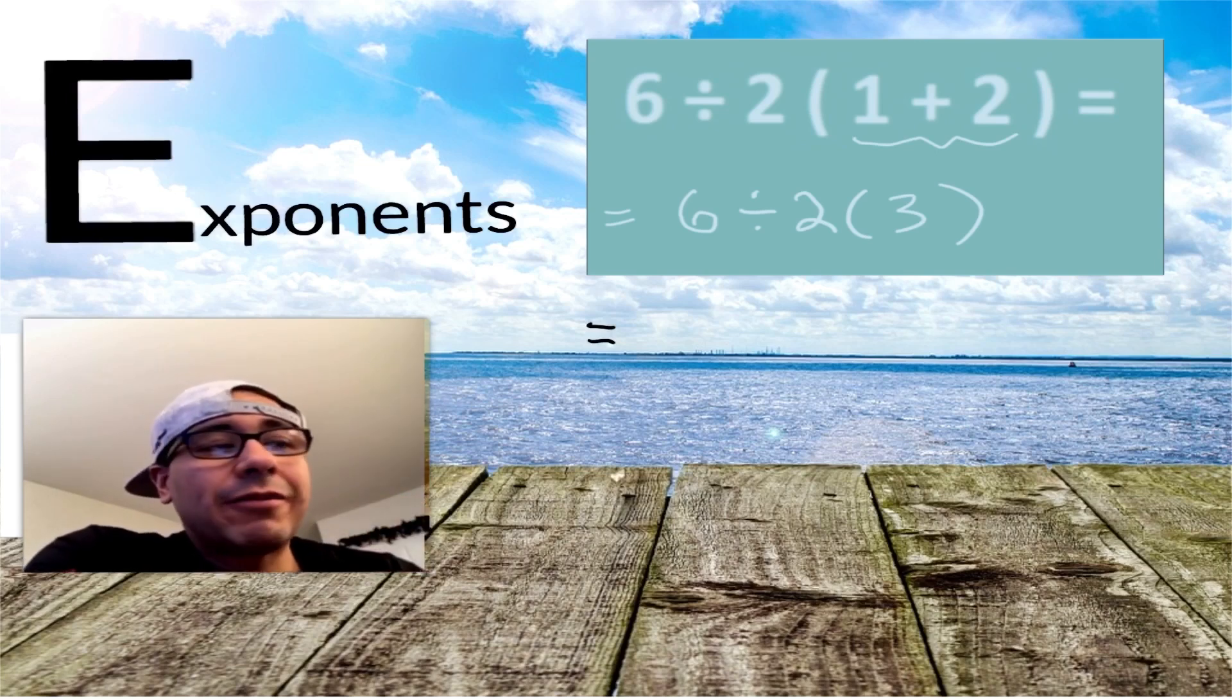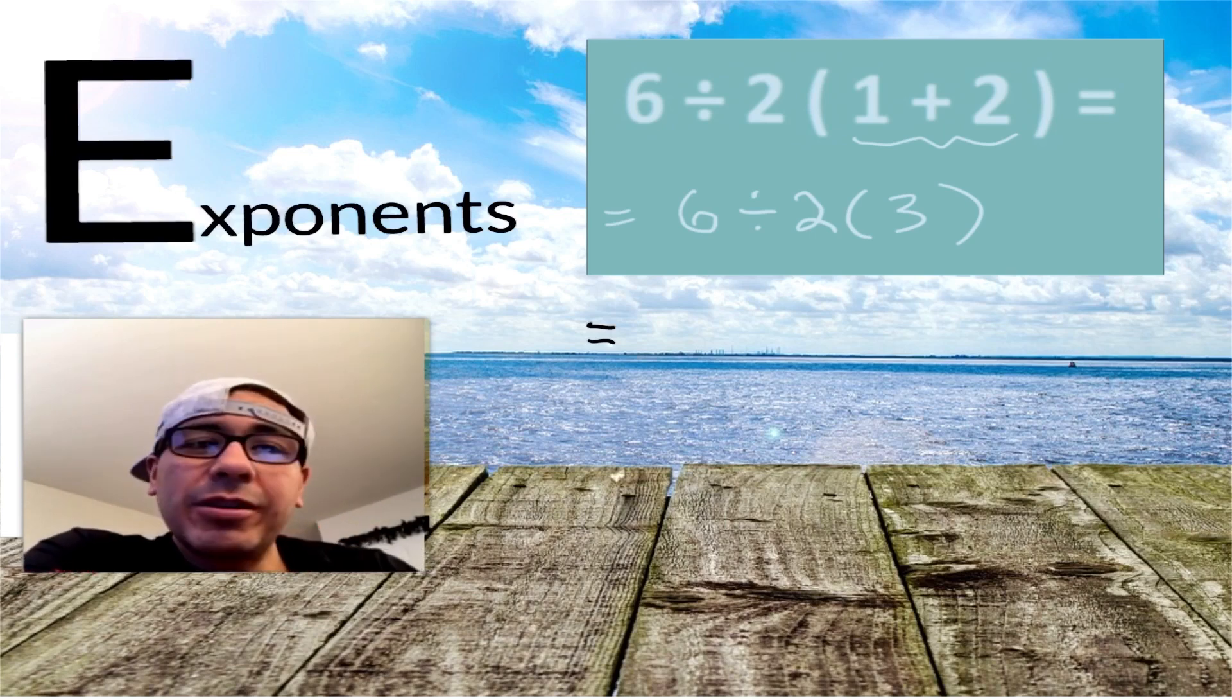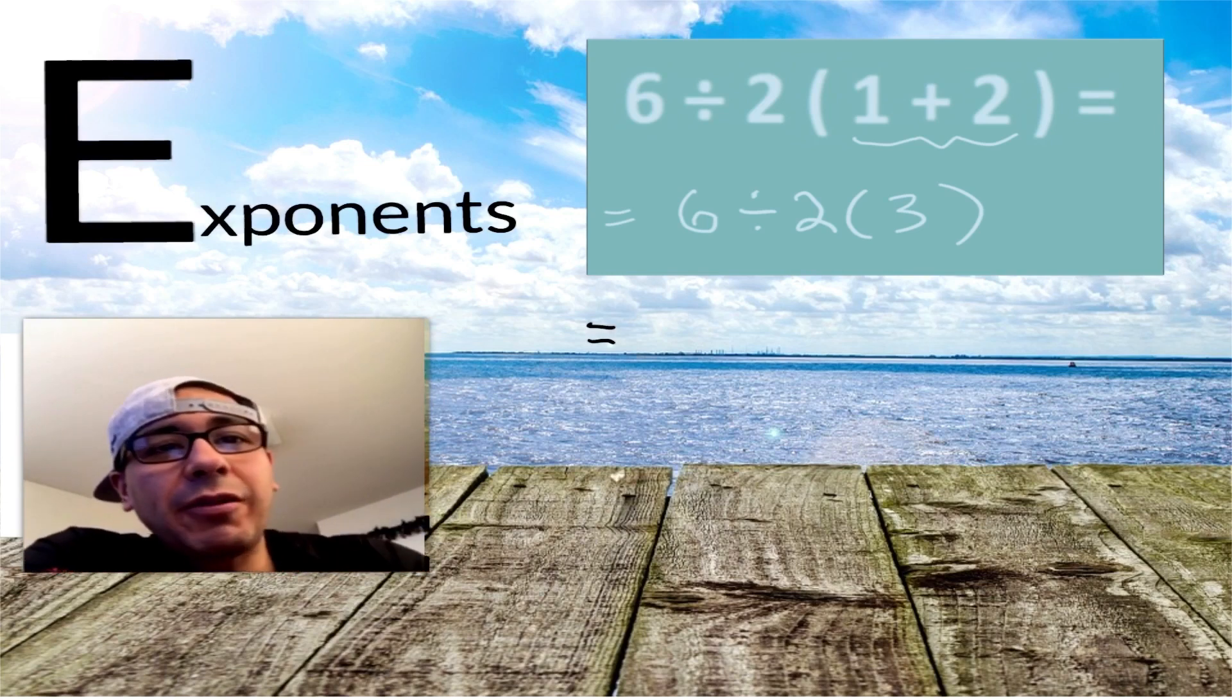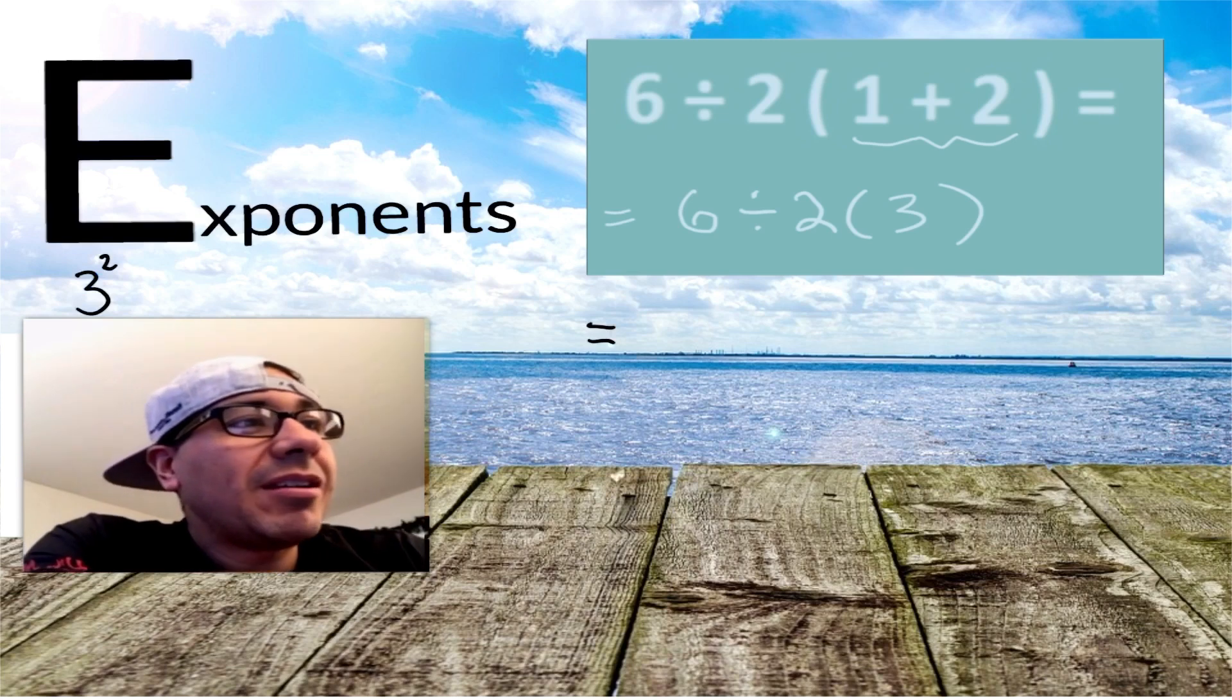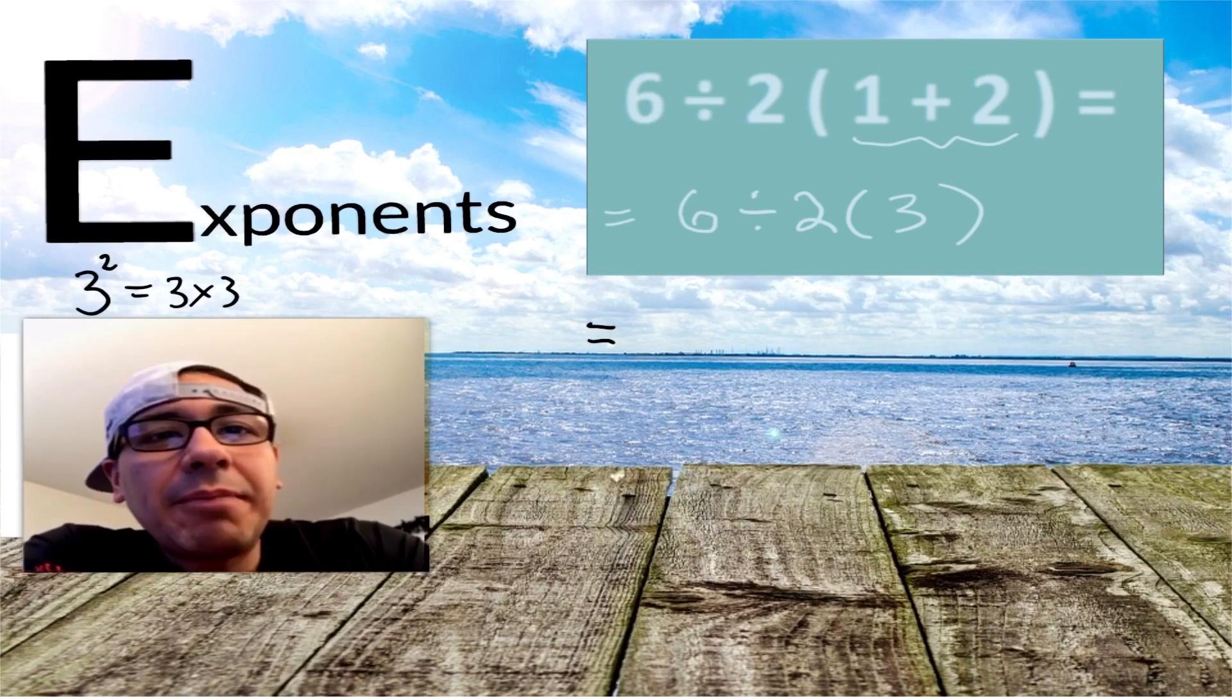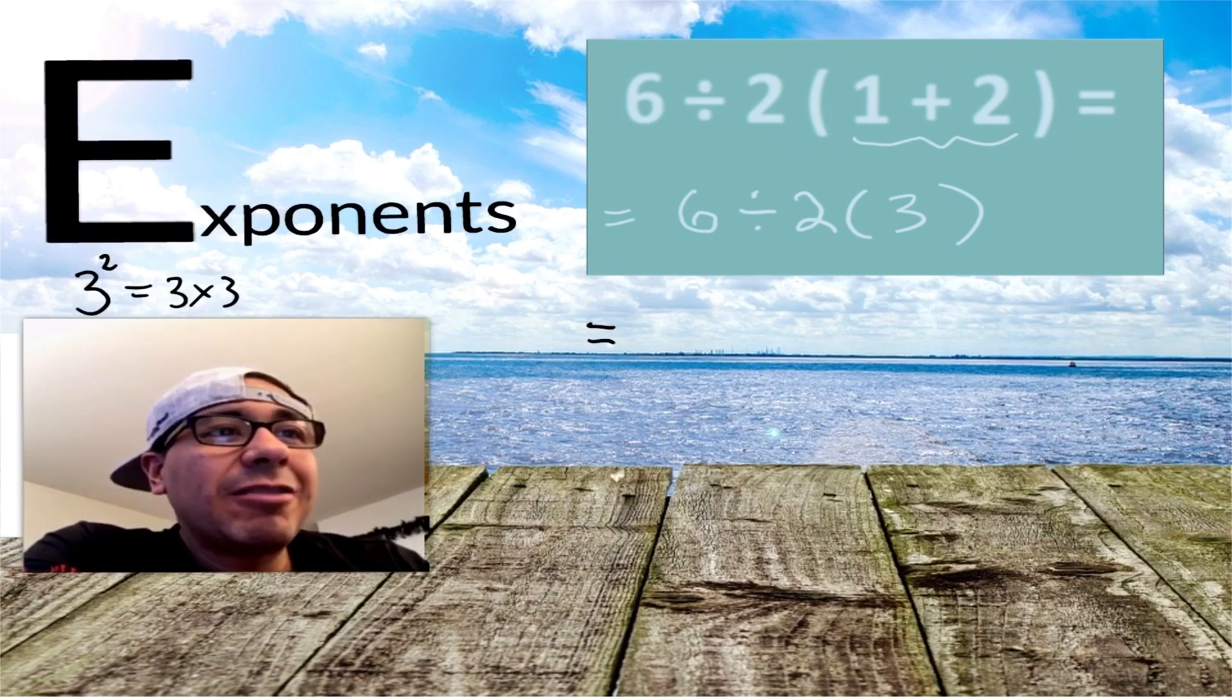Second thing we look for: exponents. If you haven't learned about exponents yet don't worry, but if you have, here's a reminder. We're looking for powers, something being squared. For example, 3 squared just means 3 times 3. We have two copies of that 3 being multiplied. In this case we don't see any exponents anywhere.